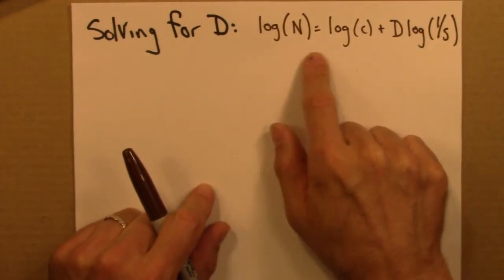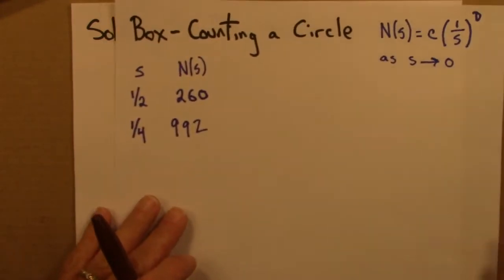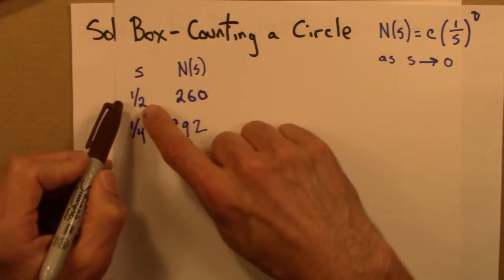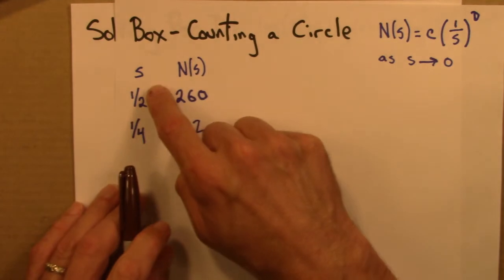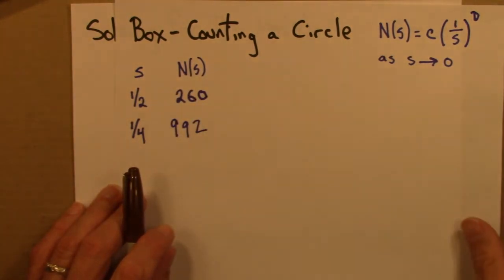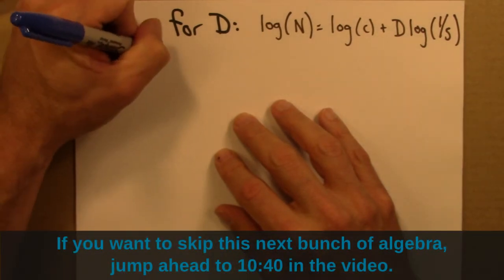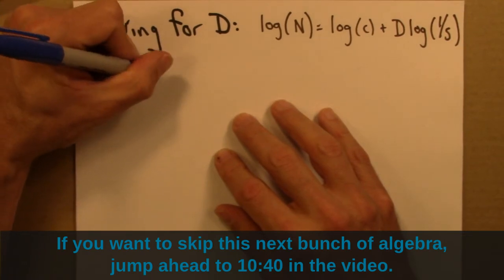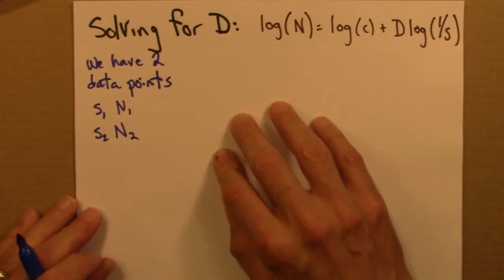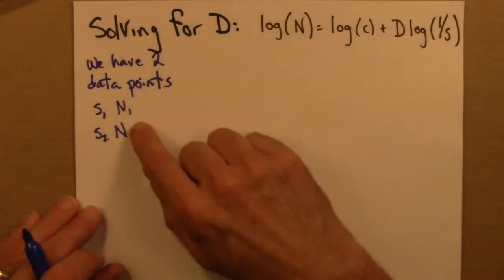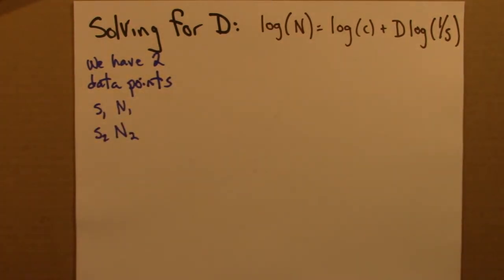So now let's think about how to solve for D. We have the equation log N = log C + D · log(1/S). What's tricky is we don't know D, but we also don't know C. In this particular instance we have two data points — two pairs of S and N. When S is one half, N is 260; when S is one quarter, N is 992. I'll denote these pairs S1, N1 and S2, N2. So I'm going to plug each pair into this equation to get two equations.